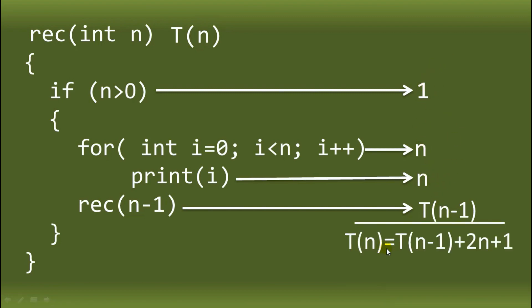Adding all of these together: T of N equals T of N minus 1, plus two N, plus 1. That is the equation we need to compute the time complexity. To simplify, following the rule of removing constants — the 2 and the 1 outside are constants — we drop them. So T of N equals T of N minus 1 plus N.